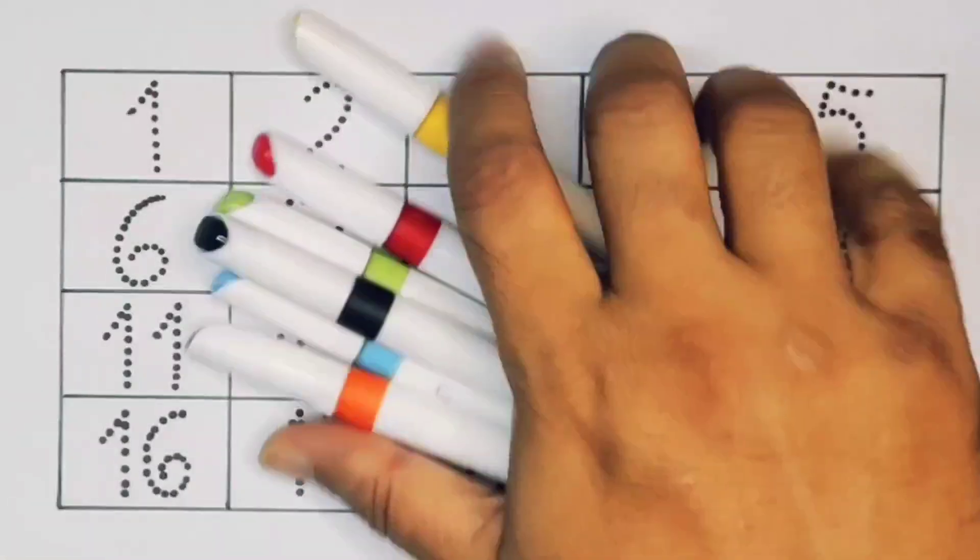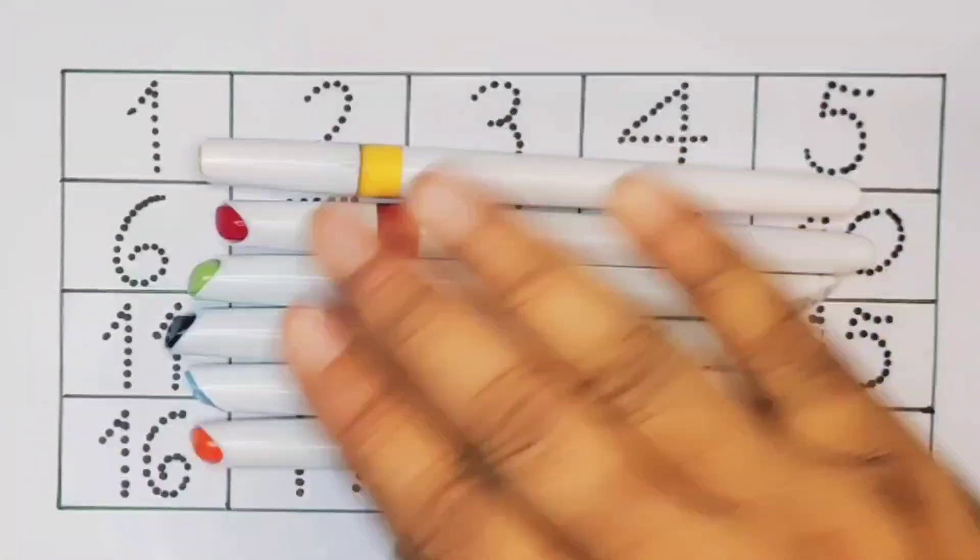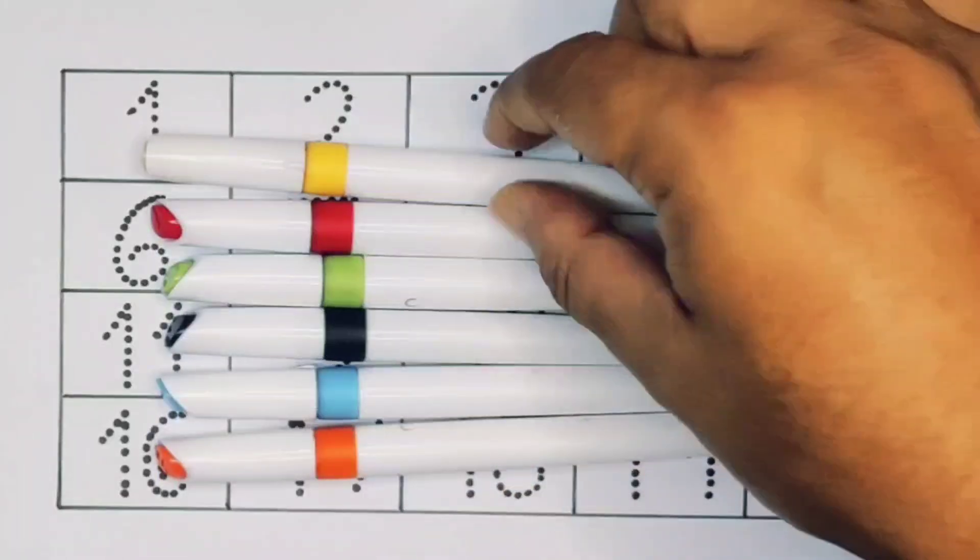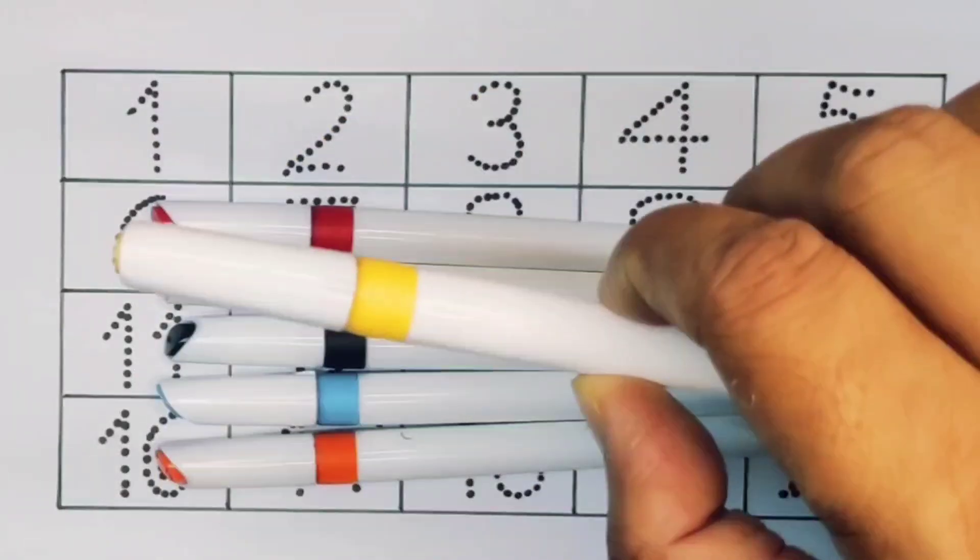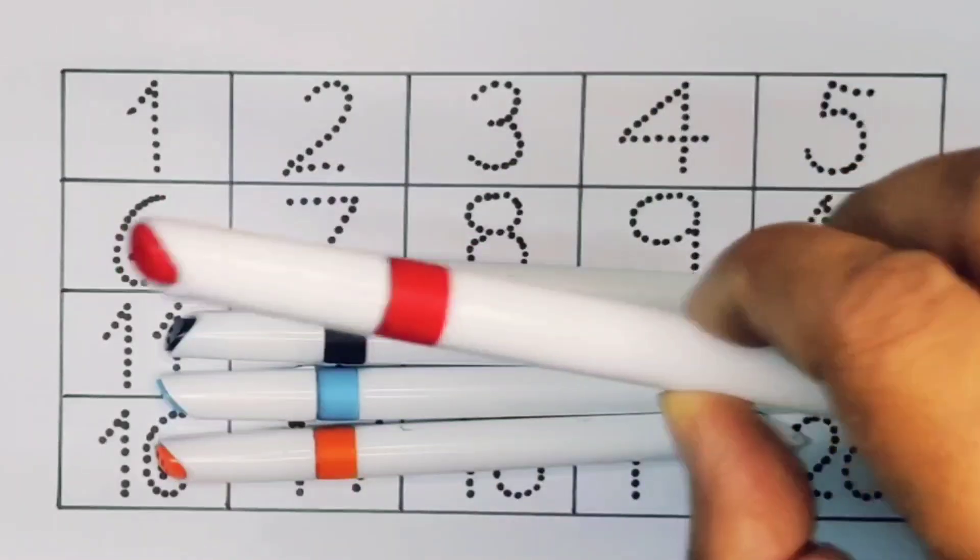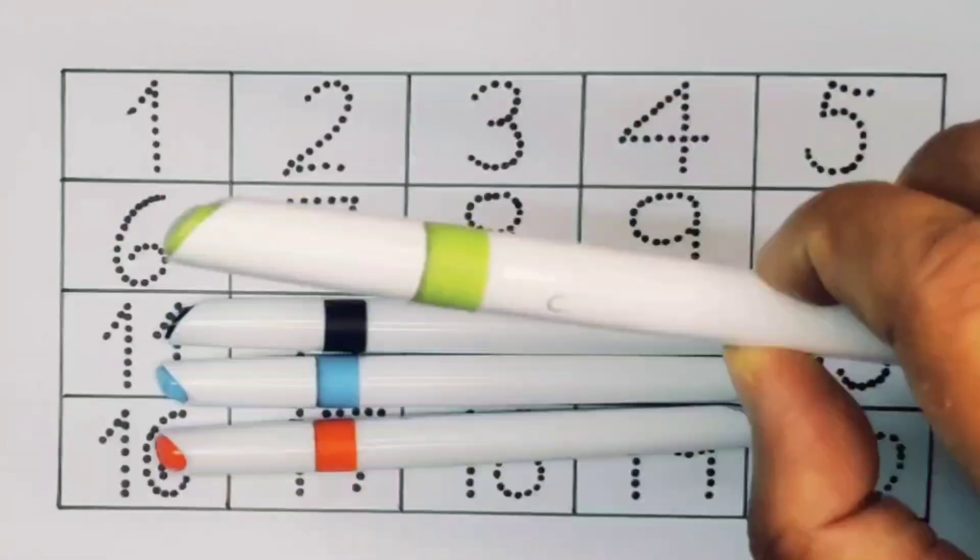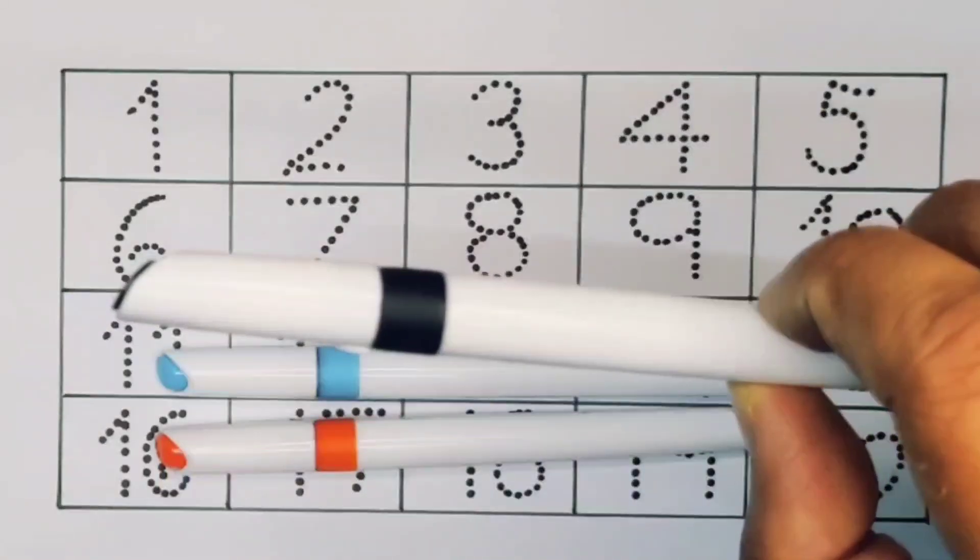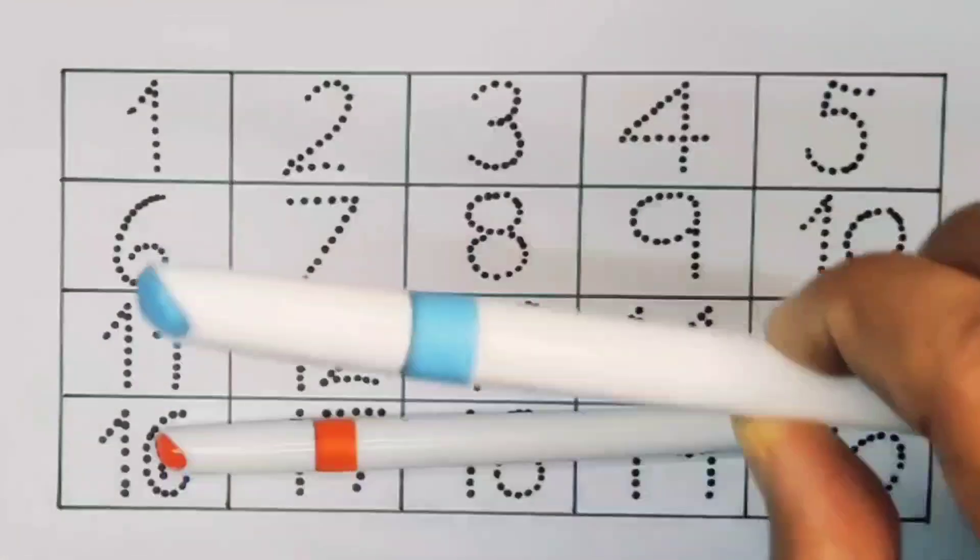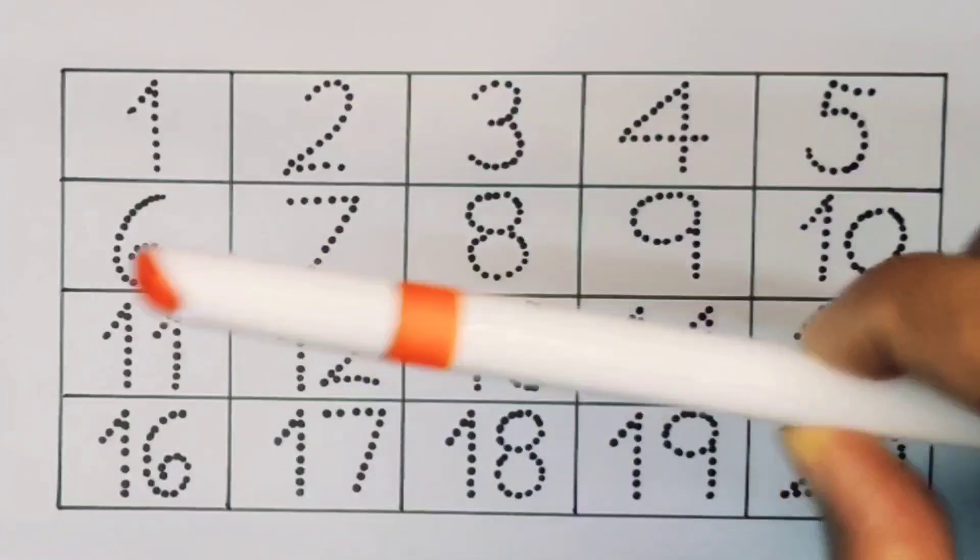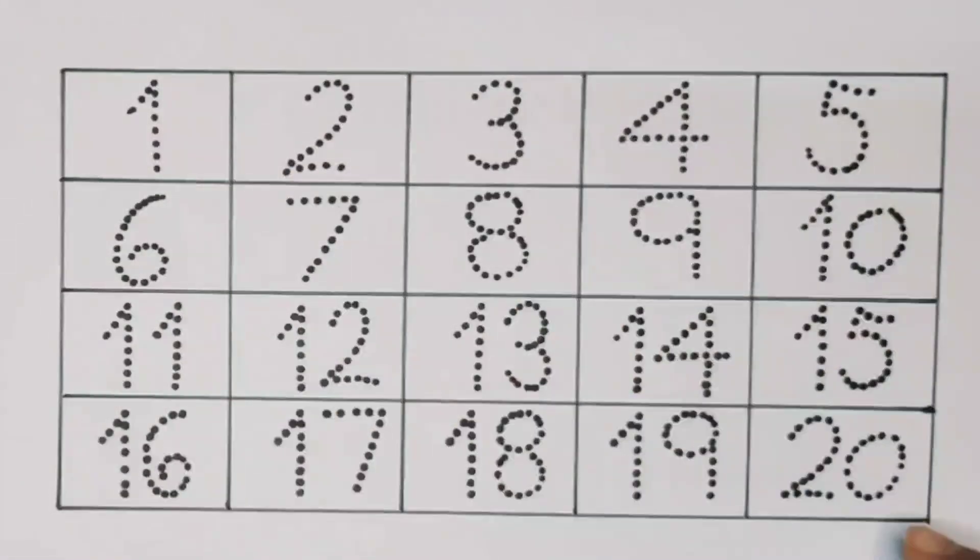Hello kids, welcome to my new video. First, we're going to learn the color names: yellow color, red color, light green color, black color, sky blue color, orange color. Now let's learn counting numbers one to twenty.